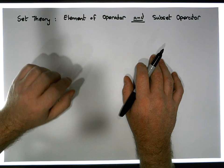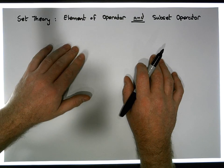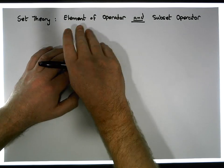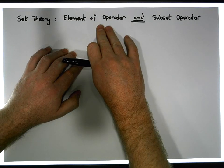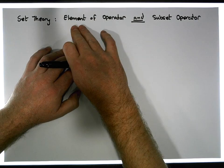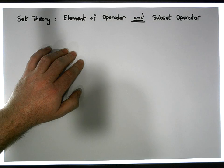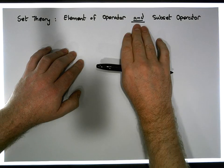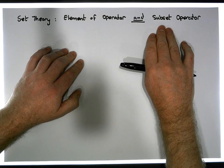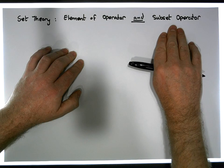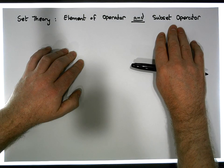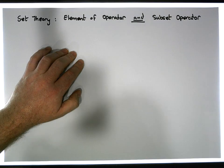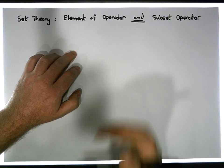These two operators are very important but subtly different from each other. The first operator is what's known as the element-of operator — it tests for set membership, whether an object is contained within a set. The second operator is the subset operator, which tests whether the contents of one set can be found in the contents of another set.